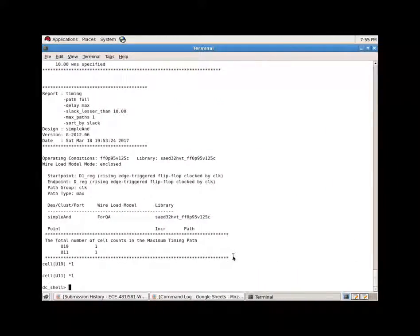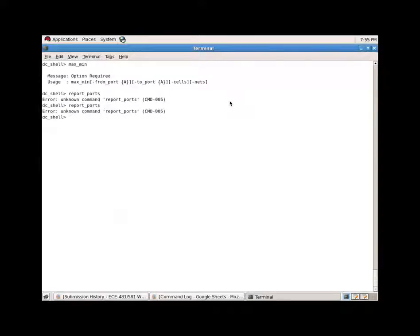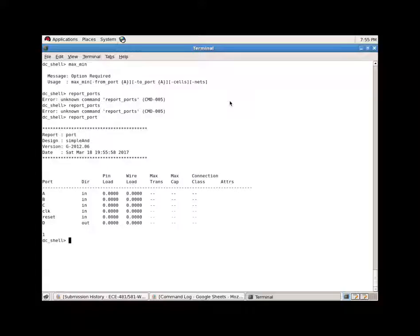Our script is already loaded. Let me quickly run the script. Maximum minimum, that's the default option, and it tells the user what options they have. Let's say, for instance, we're going to first see what ports are there.